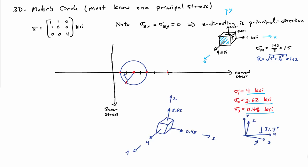This gives me Mohr's Circle for the three-dimensional state of stress, with three principal stresses identified from the diagram. The orientation of the stress element in the principal coordinate frame I can also get from the figure. If I rotate clockwise from the known state of stress over to the minimum value, that sends the X-axis to the third principal direction. I can redraw the figure: 4 KSI in the first principal direction (same as Z), 0.48 KSI in the third direction, and 2.62 KSI in the second direction. Looking down the Z axis, I've rotated 31 degrees clockwise to reach the third principal axis.